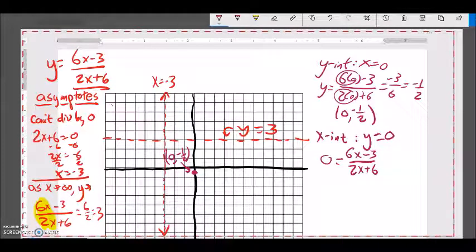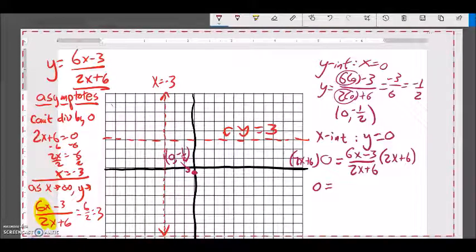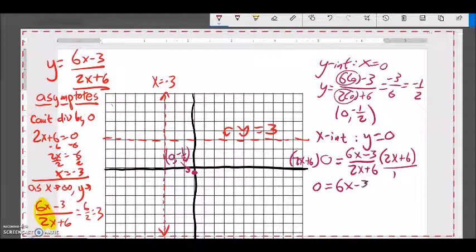So first thing is, I notice this in the denominator kind of makes it difficult to solve. So I'm going to multiply both sides by that denominator, 2x plus 6. So this times 0 is 0. Over here, this divides out to a 1. 2x plus 6 divided by itself is 1. So I'm left with 6x minus 3.